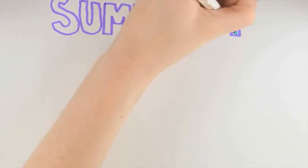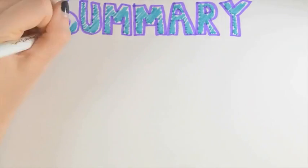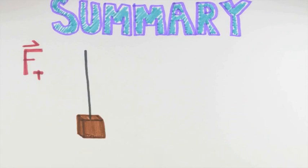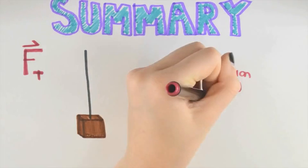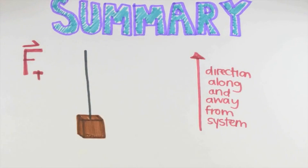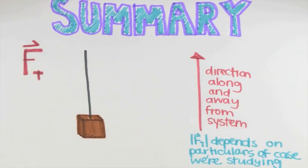So, in summary, in the model we'll use for the tension force exerted by wires and, as well, strings, ropes, and the like, the direction of the tension force is along the wire away from the system, and the magnitude of the tension force will depend on the particulars of the case we're studying.